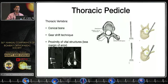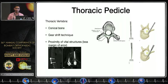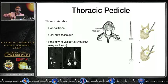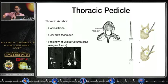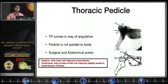Some peculiarities of thoracic pedicles to remember: the thoracic vertebra is a conical bone, so there is a high chance of lateral vertebral body breach, and proximity to vital structures gives you less margin of error. I personally use the gear shift technique for thoracic pedicle screws using a curved Lenke probe. For the first 15–20 mm, keep it strayed away from the medial wall. Once all pedicle walls feel intact, take out and gradually shift gear towards the midline — don't do too much medial angulation at once; gear shift gradually.